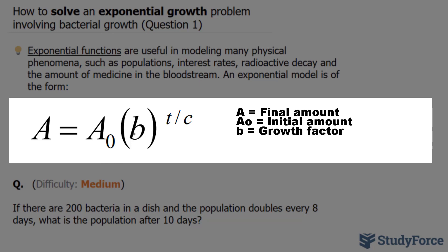b represents the growth factor, and when b is greater than 1, that means the population is growing, and when it's less than 1, it means it's decreasing. t represents the time, and finally, this small c represents the time it takes for the growth factor b to occur.